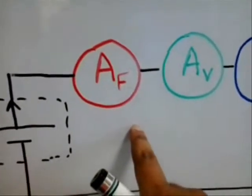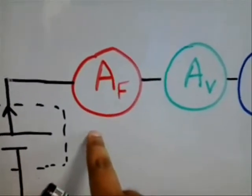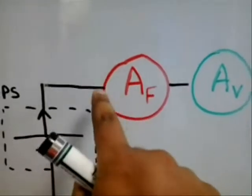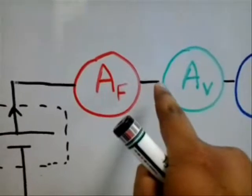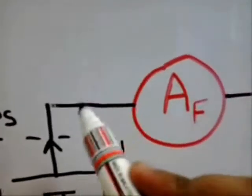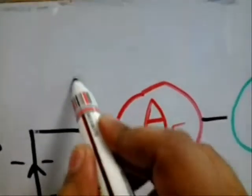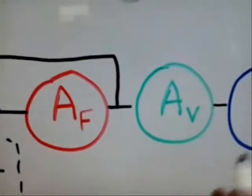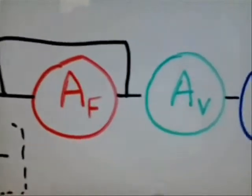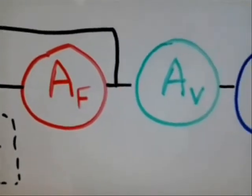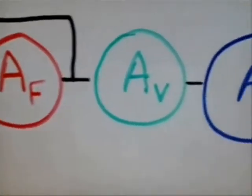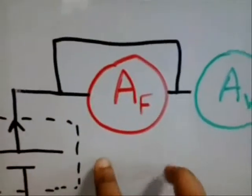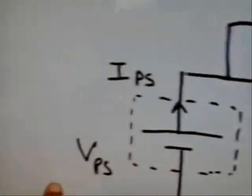Ideally when the multimeter is in ammeter mode, the internal resistance should be zero, which means that it is indeed a short here. Basically the ammeter is not going to add anything to your circuit, and the voltage drop across each ammeter should be zero.